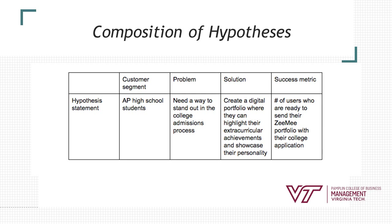Looking at the composition of a hypothesis: you have a customer segment, the problem, the solution, and the success metric — these are all key elements of what a hypothesis looks like. We have the hypothesis statement, and we're really touching the customer through empathy. What is the problem they are faced with? You'll sometimes hear 'love the problem' — really get in and dissect what that problem looks like. What solution are we trying to drive towards? And at the end of the day, how are we going to measure it? What does the success metric look like?